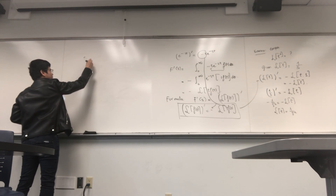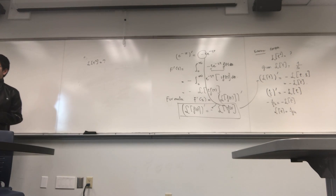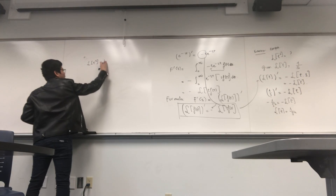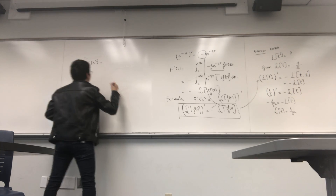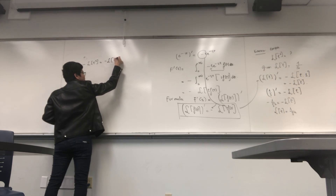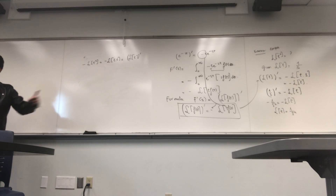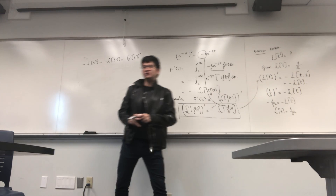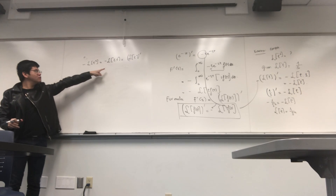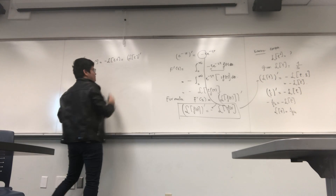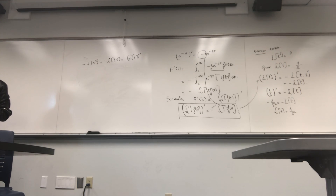Now, how can we compute L{t²}? We apply the formula again with f(t) = t. So L{t²} will be minus the derivative of L{t}. The derivative of L{t} is the derivative of 1/s², which is −2/s³.